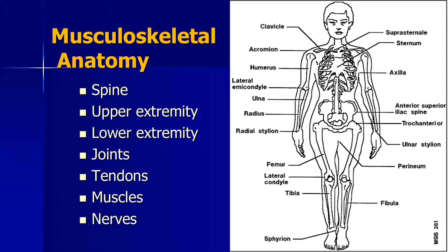Musculoskeletal anatomy — now this is not an anatomy class, this is an ergonomics class. We need to understand at least the basic terms associated with the human body, otherwise we won't be able to understand how a particular job can affect somebody's back, rotator cuff, or somebody's tendons, muscles, nerves, things like that. In this small anatomy definition series, I will explain what our body consists of.